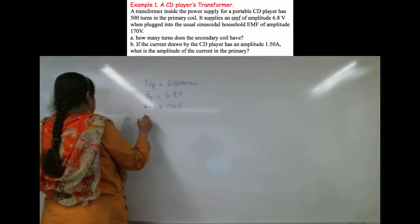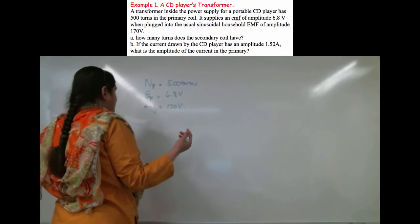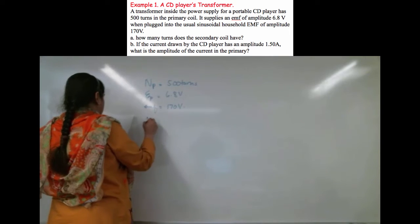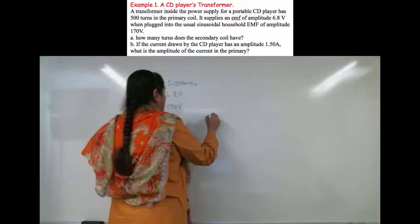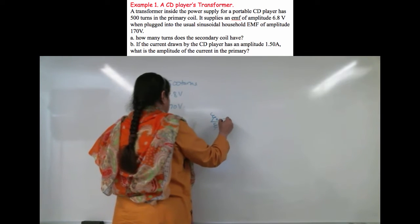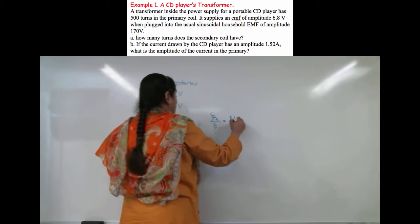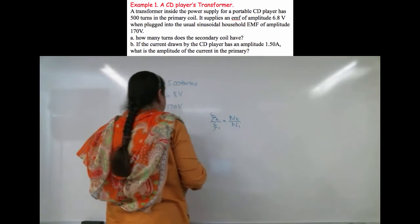We have to find the secondary coil, the number of turns in the secondary coil. What do we know? We know E2 over E1 equals N2 over N1.